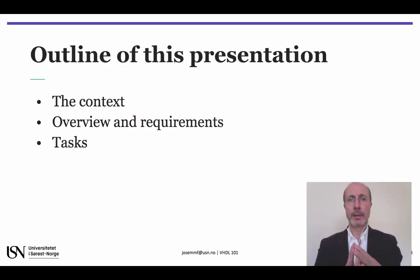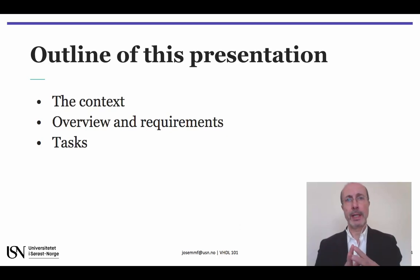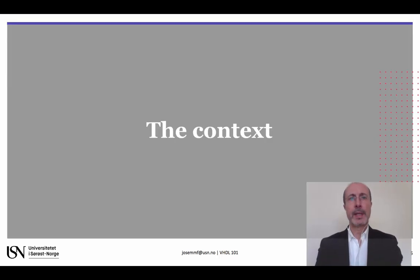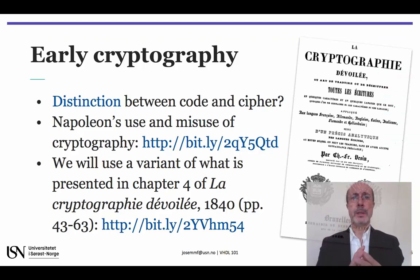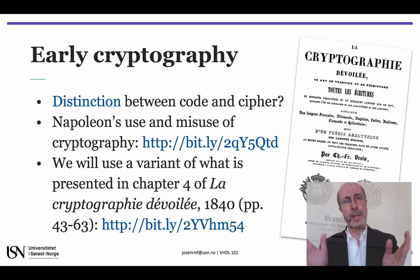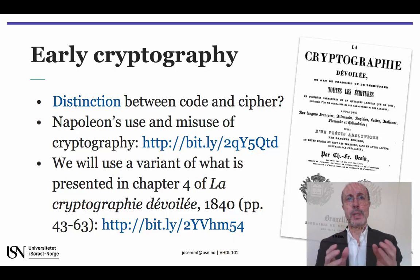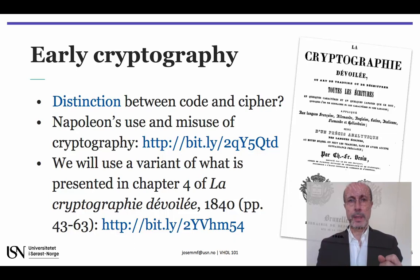I will start by the context, present an overview and the requirements of this assignment, and then identify the main tasks that you have ahead. I don't want to spend much time on this part, so I'll just recommend you to search for the distinction between codes and ciphers and then check these two sources addressing the historical aspects associated to early cryptography methods.